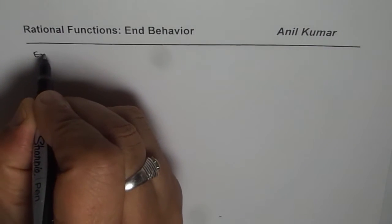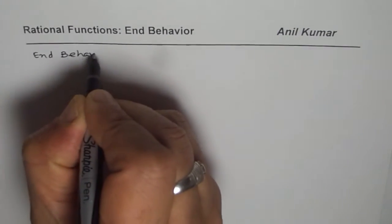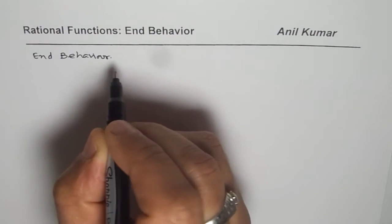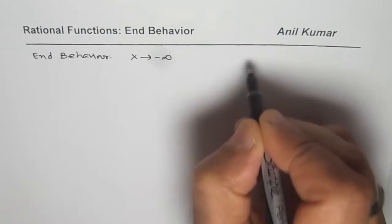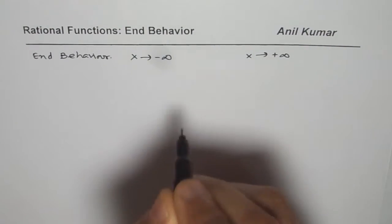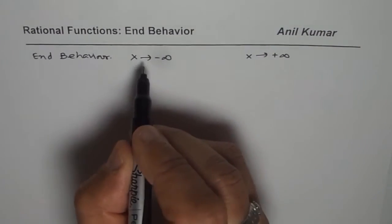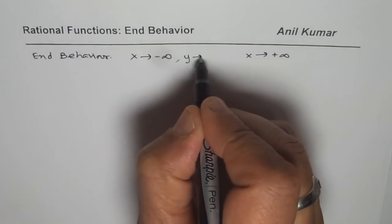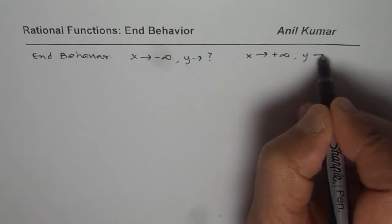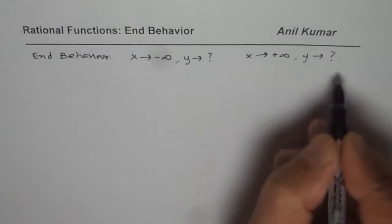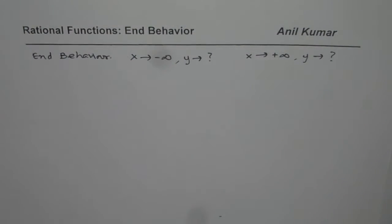I am Anil Kumar and in this video we will understand broadly the end behavior of rational functions. End behavior means what happens to the value of the function as x approaches negative infinity and when x approaches positive infinity. So end behavior is: when x approaches negative infinity, y approaches what? When x approaches positive infinity, y approaches what? This definition is the base for end behavior.